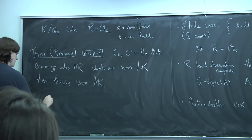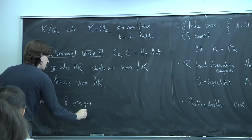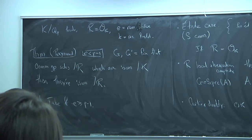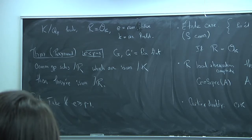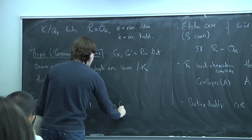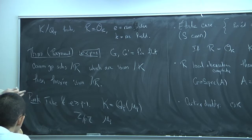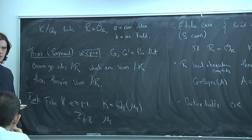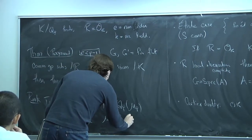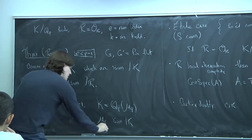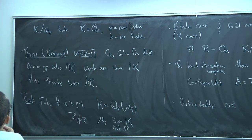The theorem is false if e is not less than p minus 1. For example, if you take K = Q_p(ζ_p), then you have two group schemes μ_p and Z/pZ over R, which are finite flat. They're isomorphic over K because you have a p-th root of unity. But they're not isomorphic over R — their special fibers are different, since one is étale and one is connected.